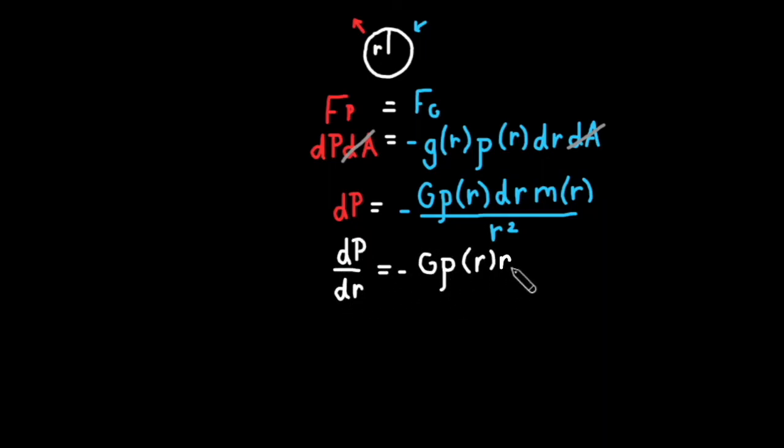We can also solve for a change in pressure over a change in mass. Mass is equal to density times volume, so we can set a small section of the body's mass equal to its surface area times density times an infinitely small change in height.